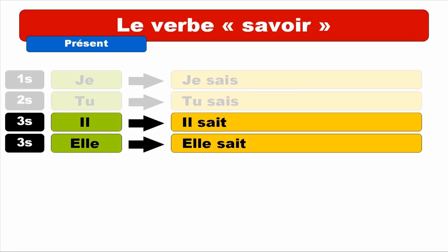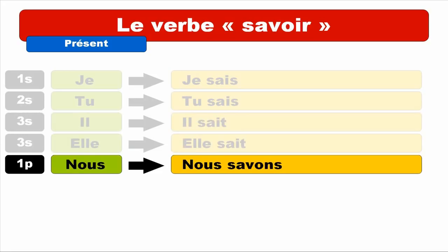So have a look at the first person of the plural — NOUS. We've got NOUS SAVONS. Repeat. NOUS SAVONS. Final S not pronounced, as usual. You've got the final N — NOUS SAVONS.